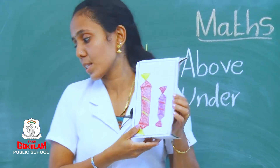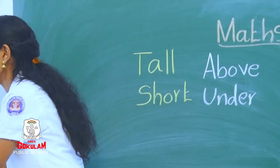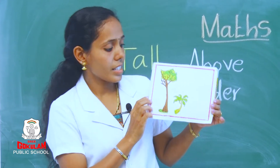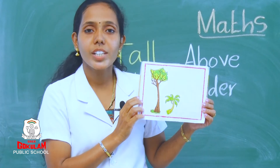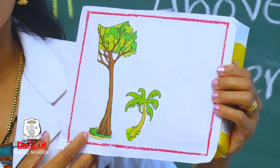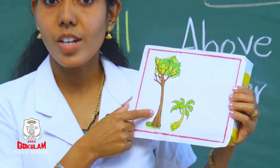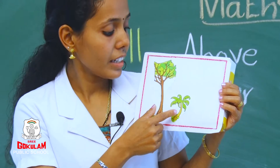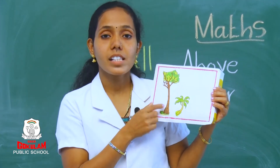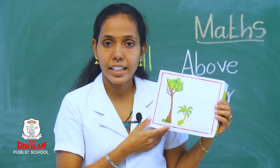See the next picture. Children, see the trees. Which is the tall tree? Yes, this one is tall and that one is short. Is it clear students?